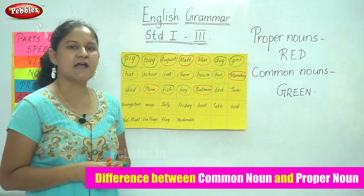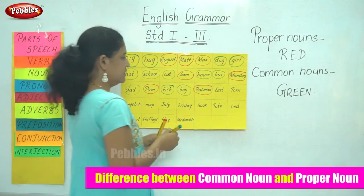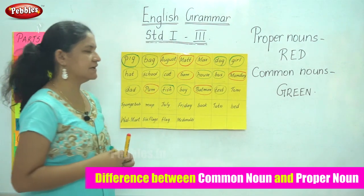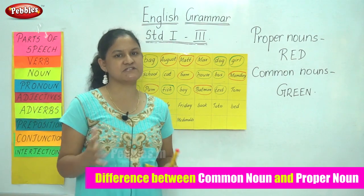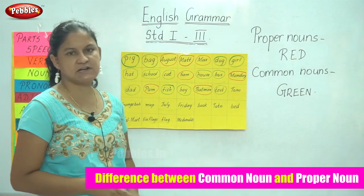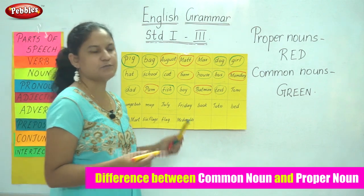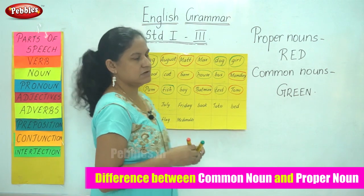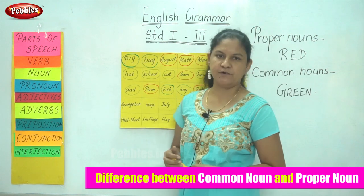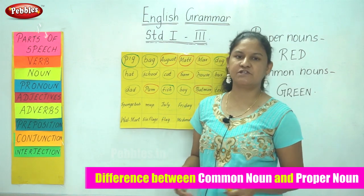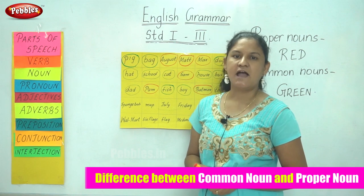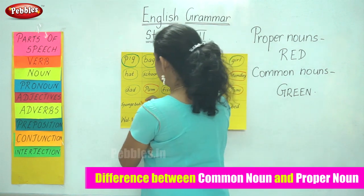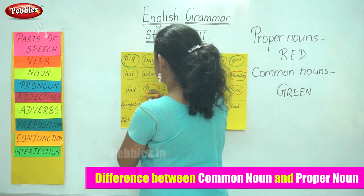The next word is test and it is a common noun, so I circle it in green. The next word is Tom. Tom is the name of a specific person, it starts with a capital letter, and hence it is a proper noun, so I use my red to circle the word Tom. The next word is Spongebob. Spongebob is the name of a particular cartoon character, it starts with a capital letter, and hence is known as a proper noun. So I use my red to circle the word Spongebob.